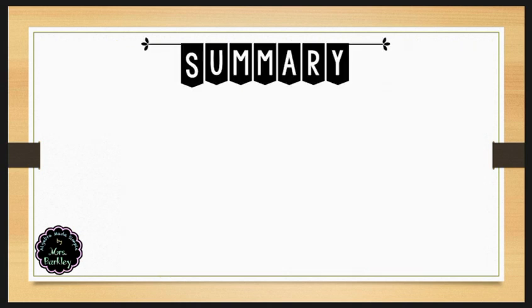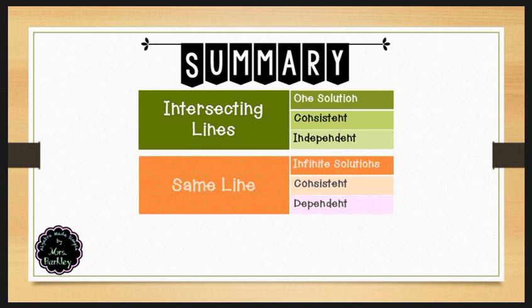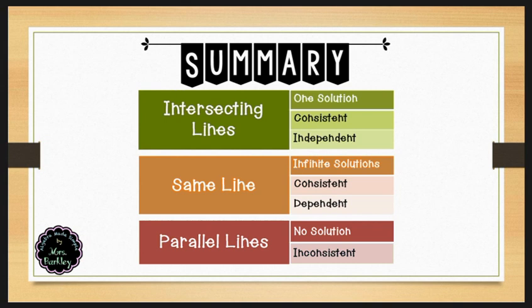Let's summarize what we learned today. Intersecting lines have one solution, so we classify those as consistent and independent. If we have the same lines in our system, there are an infinite number of solutions, so that is consistent and dependent. If our lines are parallel, there is no solution because those lines never intersect, and we classify that as being inconsistent.